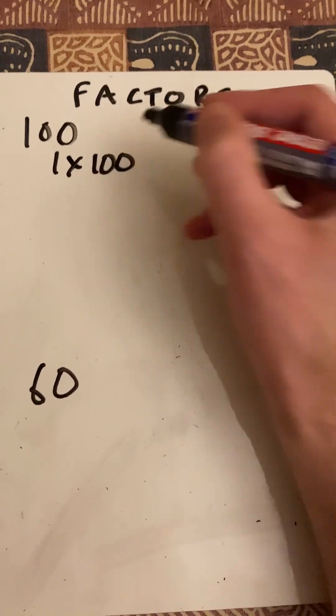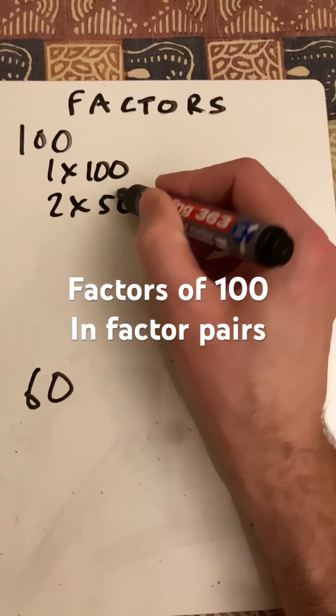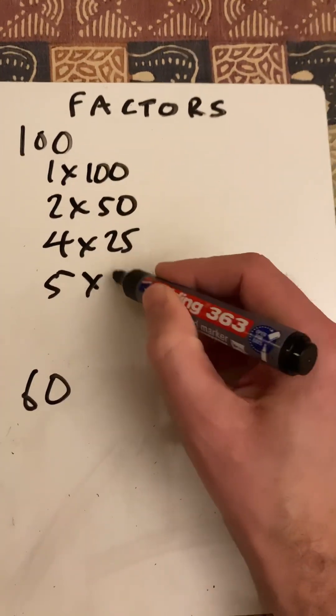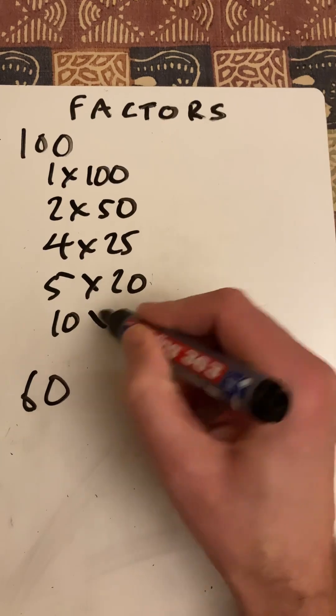1 times 100 in its factor pairs. 2 times 50, 4 times 25, 5 times 20, and 10 times itself.